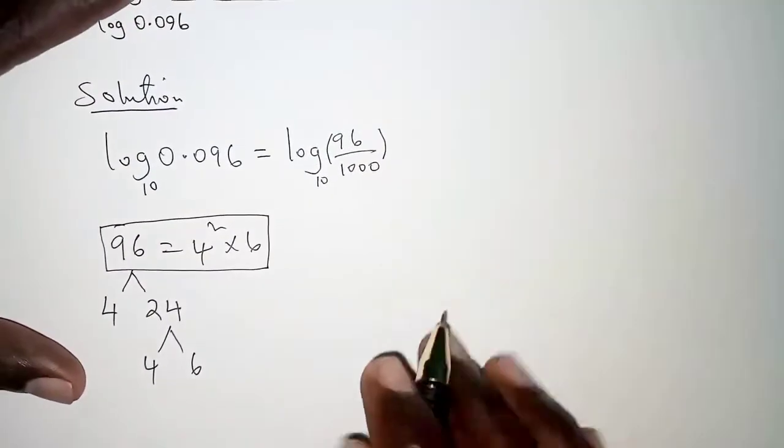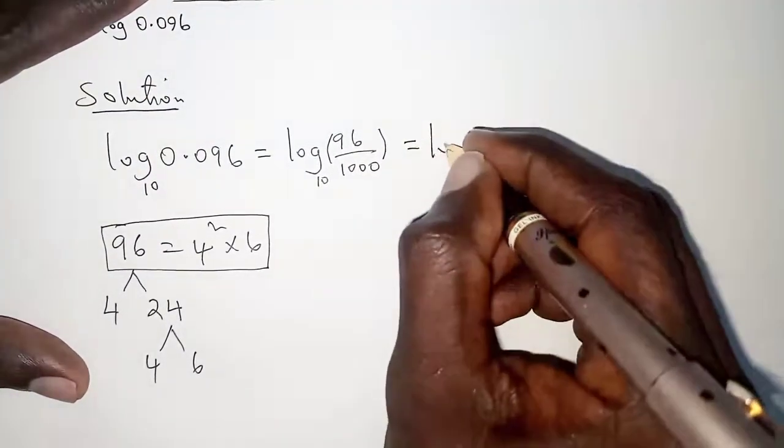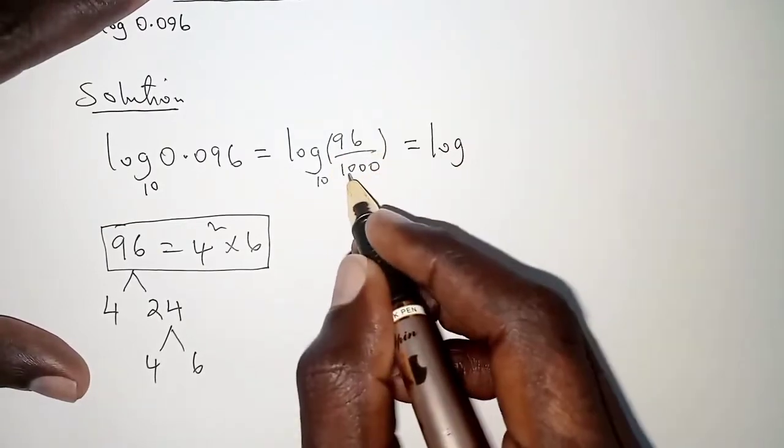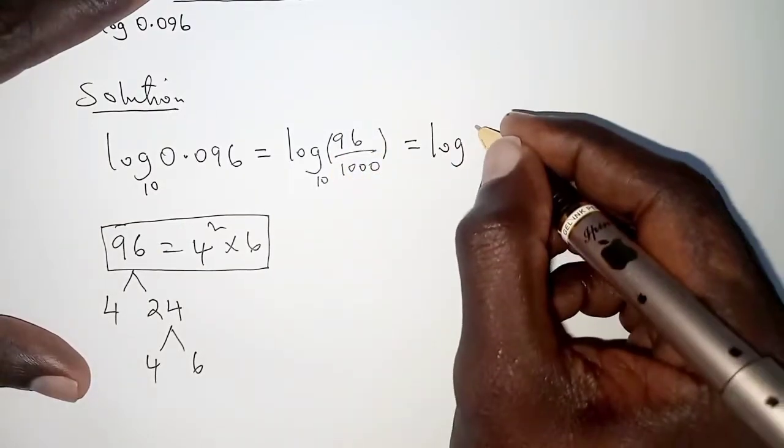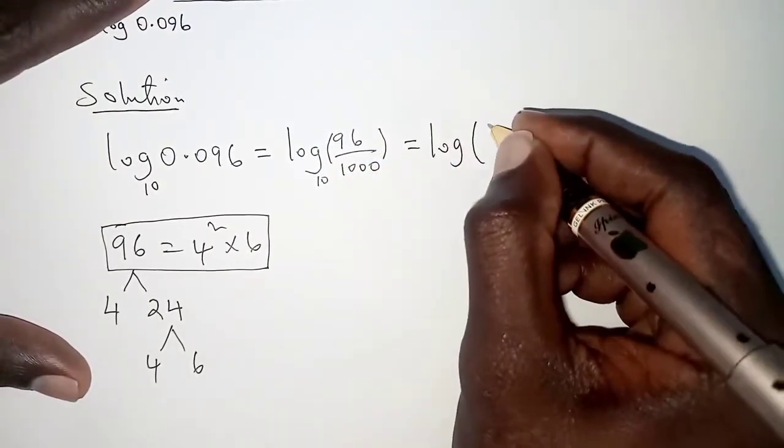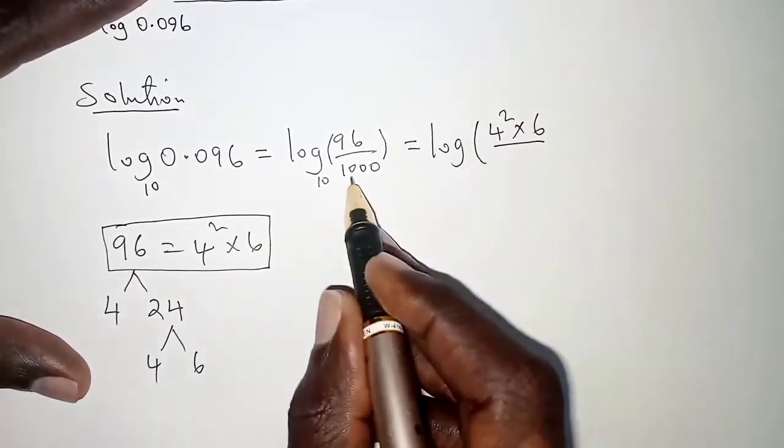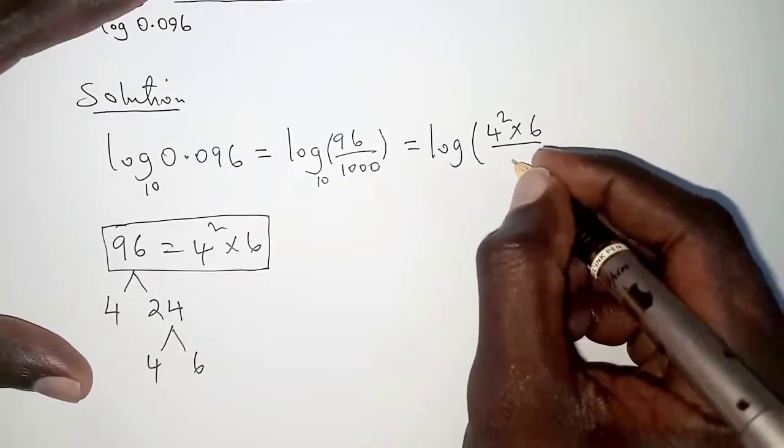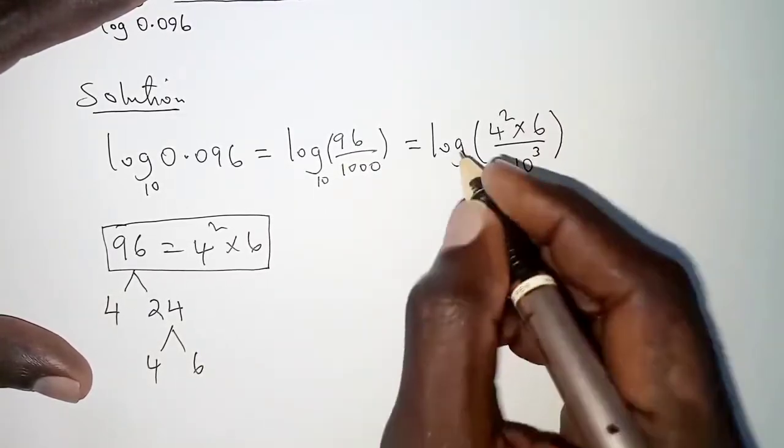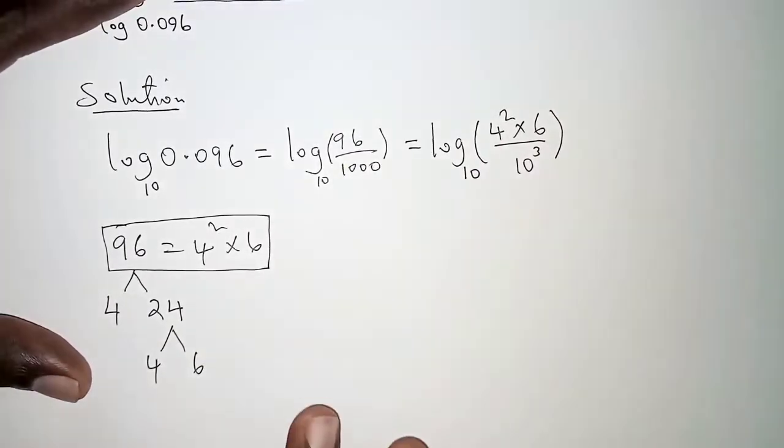So log(96/1000) = log((4² × 6)/1000). For 1000, we can express it as 10³, still to base 10.